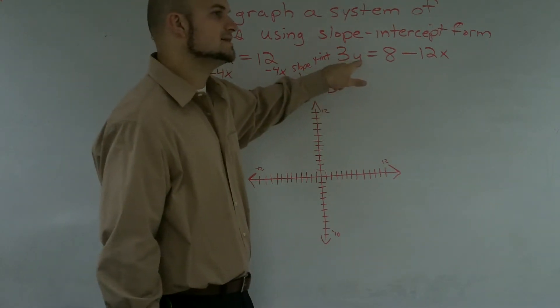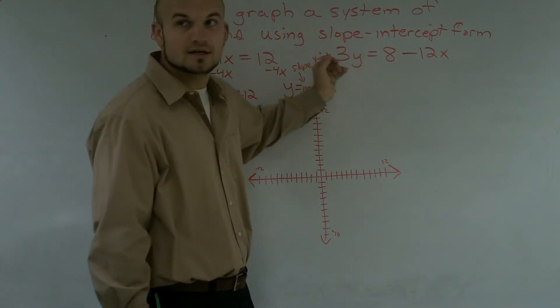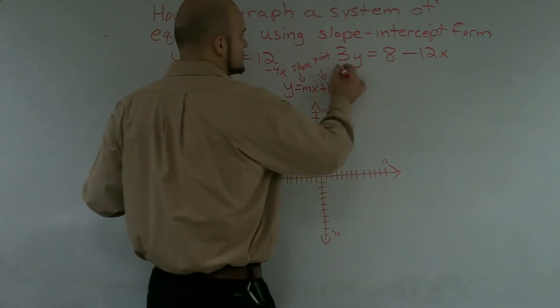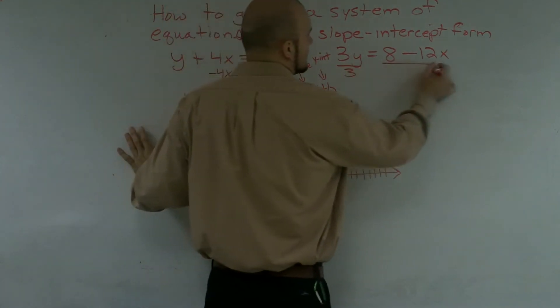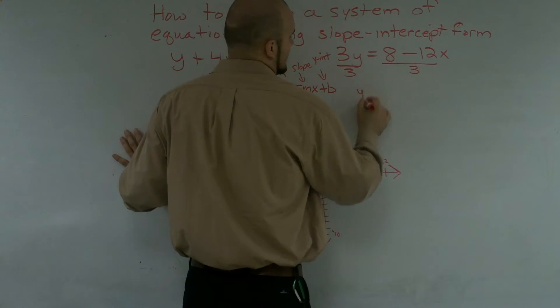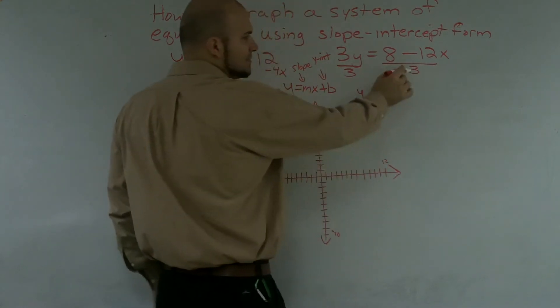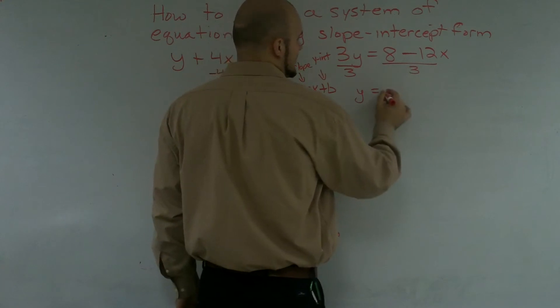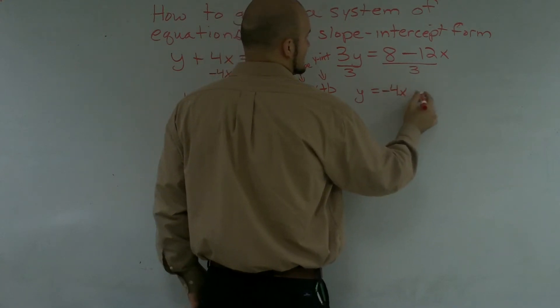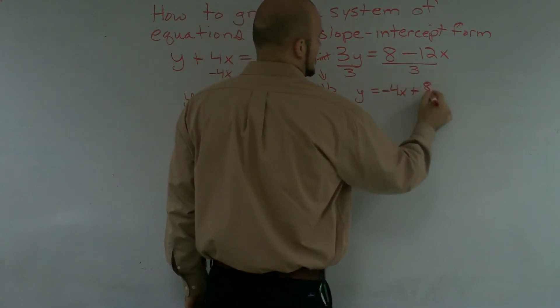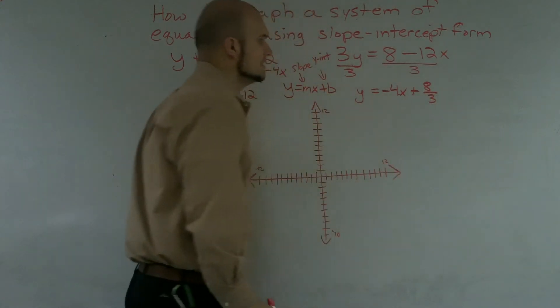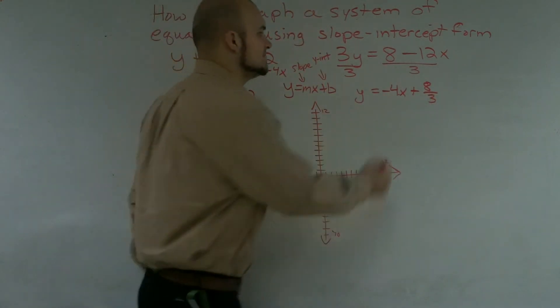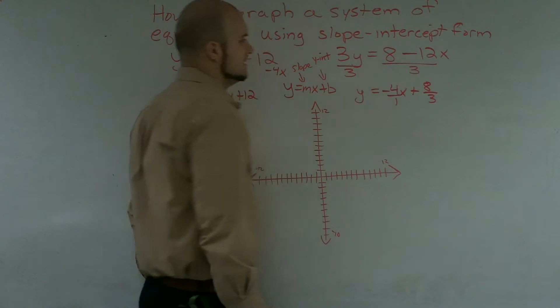Over here, to get my y by itself, I need to use the inverse operation of multiplication, which would be division. So I'm going to divide by 3 on both sides. I get y equals. And notice that 3 is divided by 8 and the 3 is divided by the negative 12x. So therefore, I get a negative 4x plus 8 over 3. And again, what you'll notice is we have another whole number. We can make that over 1.